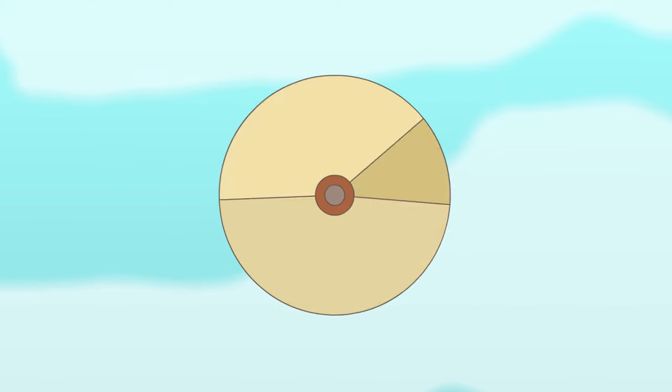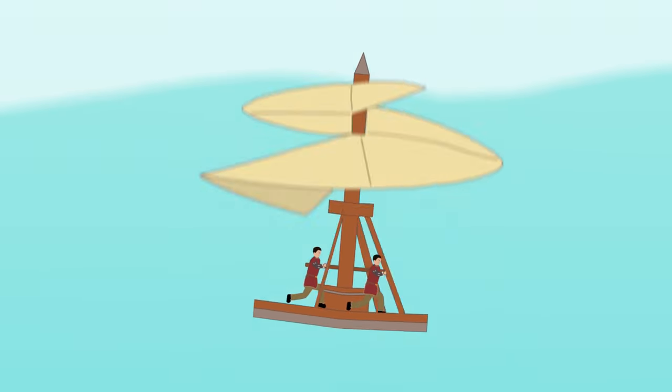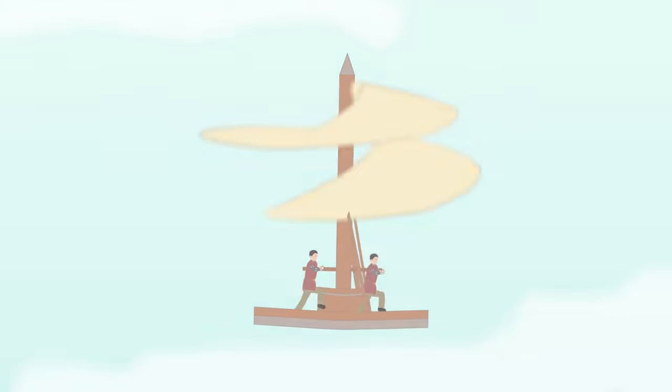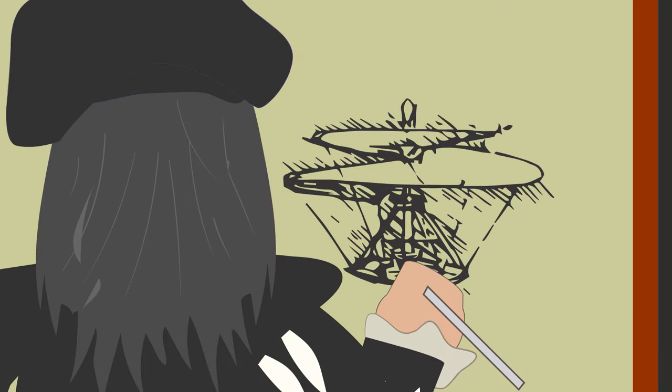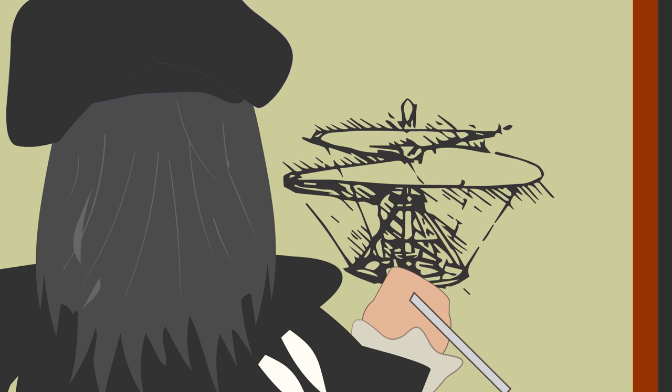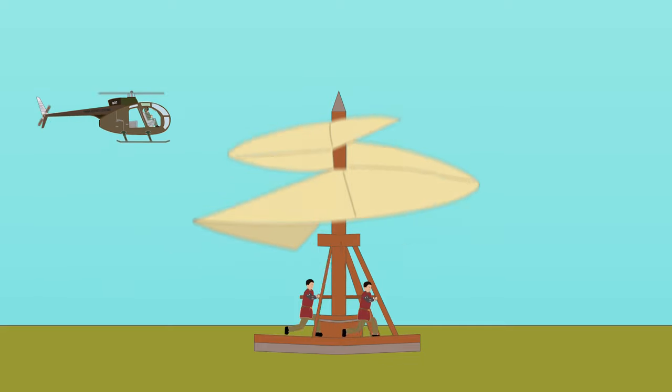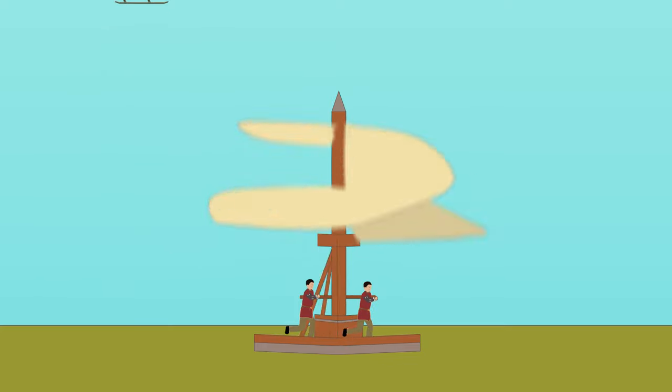Although da Vinci's design was undoubtedly well ahead of its time and demonstrated a clear understanding of the physics that underpin how modern helicopters are able to gain elevation, the technology of the late 15th century had simply not evolved to the point where a fully functional machine could actually be constructed. Although there was no attempt to build one during da Vinci's life, modern reconstructions have shown that the machine was simply too heavy to ever take off.